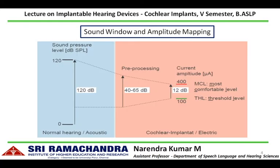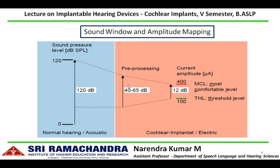The sound window and amplitude mapping work as follows: normal acoustic hearing has a dynamic range of around 120 decibels. However, very soft sounds do not have speech sound representation at a conversational level and hence do not help in speech perception, while loud sounds can be compressed. The microphone of the speech processor has its own dynamic range, picking up conversational level speech sounds and compressing louder sounds — this is called the input dynamic range, which varies from 40 to 65 decibels.